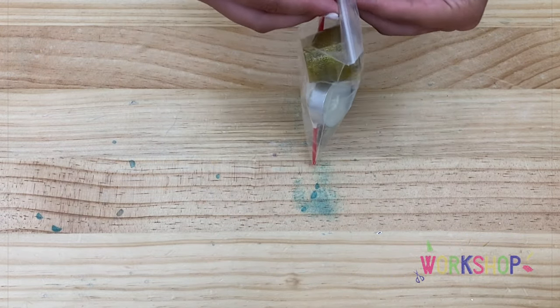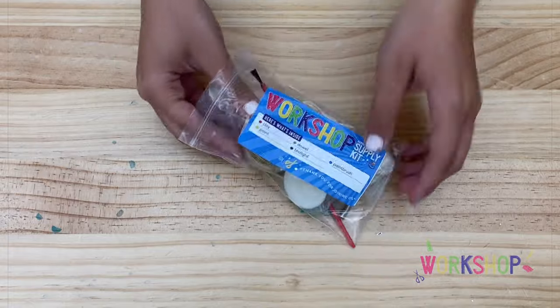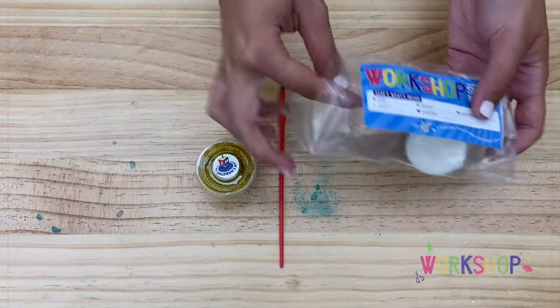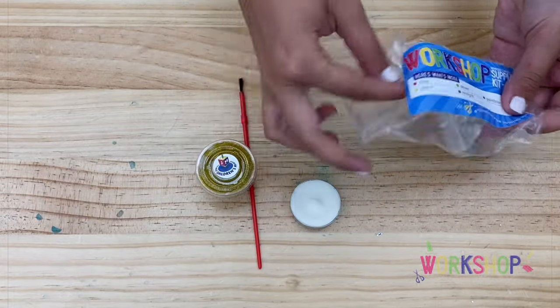Some glittery gold paint or whichever color you choose, a paintbrush, a tea light, a ball of clay, and lastly a small dowel.